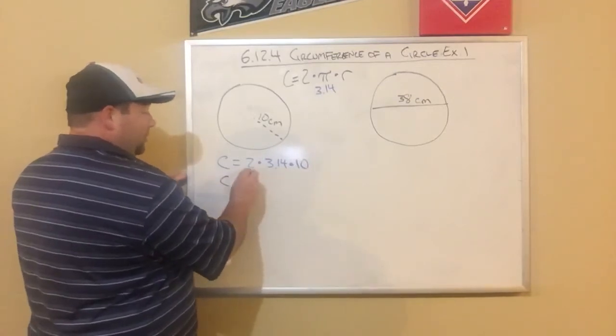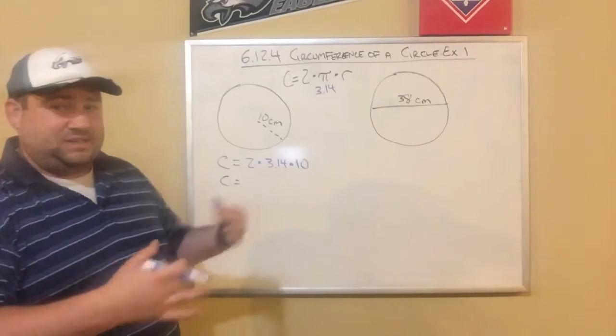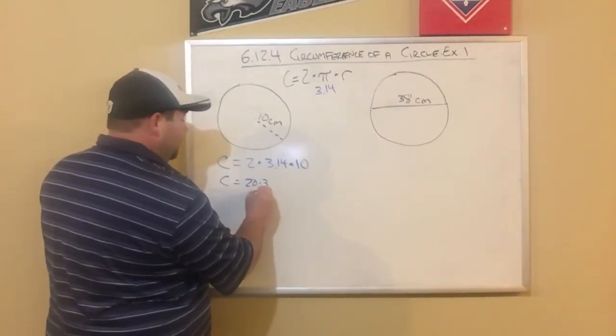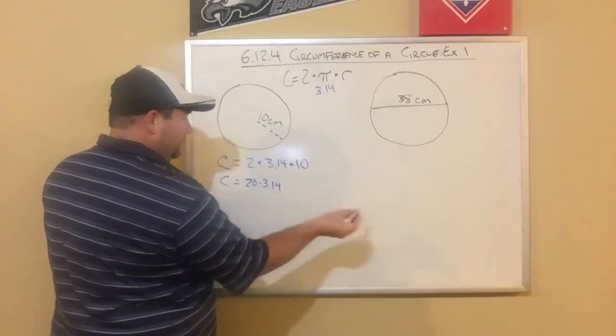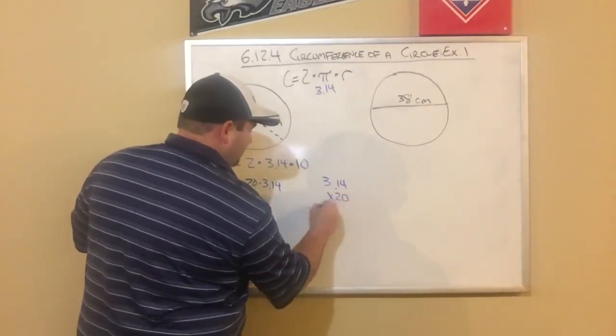the smart way to do this would be to multiply the whole numbers first. Because remember, when you multiply in order, it doesn't matter. So I would do 2 times 10 is 20. And then I'm going to do 20 times 3.14. So I come over here. 3.14 times 20.